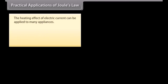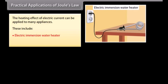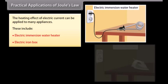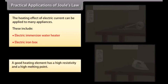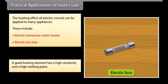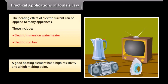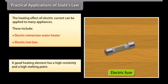Practical applications of Joule's Law: the heating effect of electric current can be applied to many appliances, including electric immersion water heaters and electric iron boxes. A good heating element has a high resistivity and a high melting point. For example, an electric fuse is an example of the heating effect of electric current. The rating of 3A on an electric fuse states that the maximum current it can sustain is 3A.